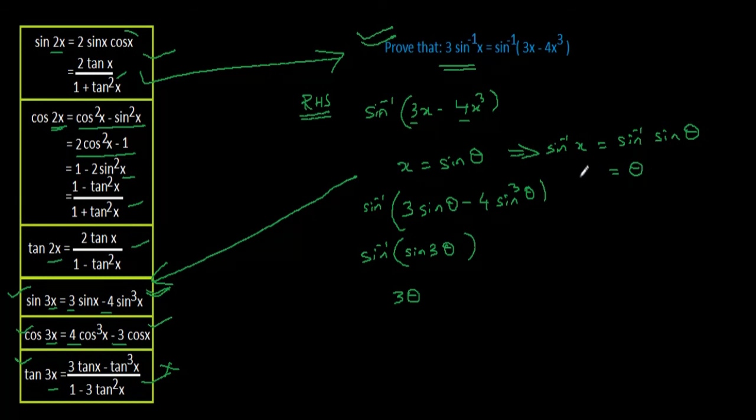In place of θ, I can write sin⁻¹(x). So 3 times θ, I can write 3 sin⁻¹(x), which is equal to the left-hand side. So we have to use these formulas to solve the given question of inverse trigonometric functions.